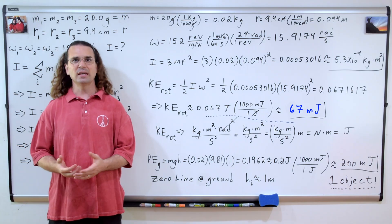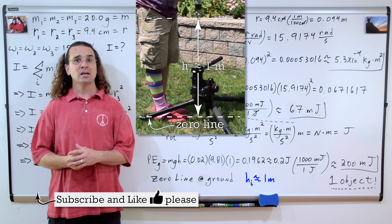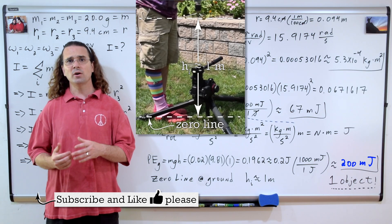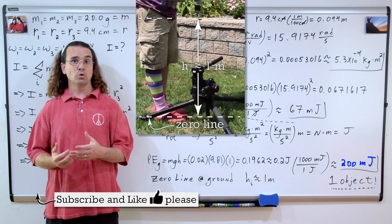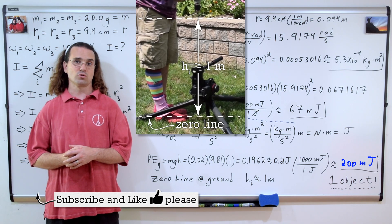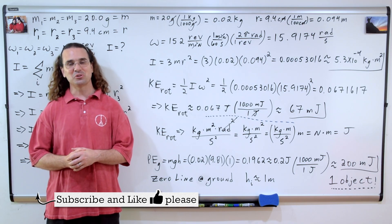Also for comparison's sake, if we assume the objects are each roughly one meter above the ground and set the zero line at the ground, each object has about 200 millijoules of gravitational potential energy which would be converted to translational kinetic energy if they were to fall toward the ground. Thank you very much for learning with me today. I enjoyed learning with you.